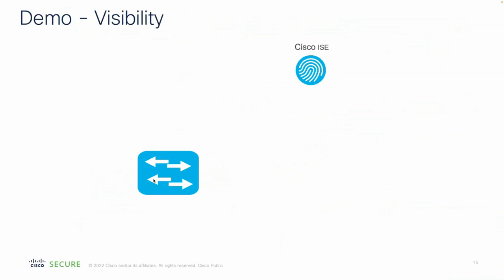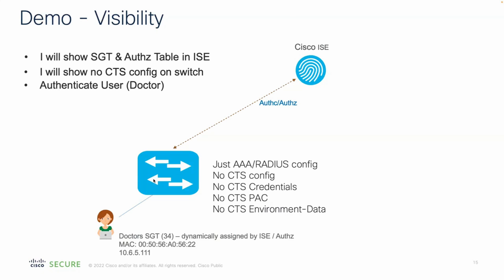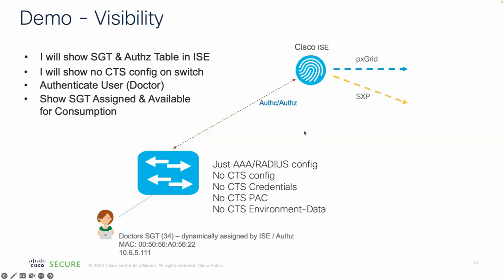Now for a demo of this visibility. I have an access switch. I'll show the SGT and authorization table in ISE, then show there's no CTS or SGT config on the switch — just AAA and RADIUS needed for authentication. I'll authenticate a user using the doctor example: authorize the doctor with an SGT called 'Doctors' with number 34. The MAC address ends 5622 and the IP address ends 111. When that's happened, I'll show that ISE has the information needed to send that visibility out to other network devices.